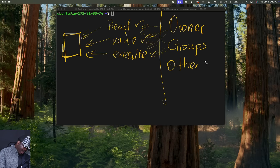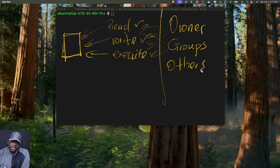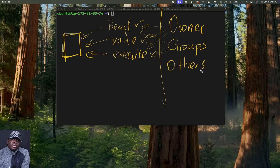The final category of people are others — that's any other user on your Linux operating system. In summary: when you create a file in Linux, it comes with three permissions — read, write, and execute. And there are three categories of people that can access that file: the owner, who is the person that created or was assigned to own the file; groups, people who share the same permissions; and others, any other user on your system. Now let's go into our server and run the command to see the permissions attached to our files.